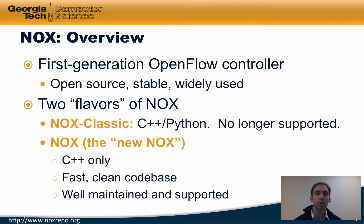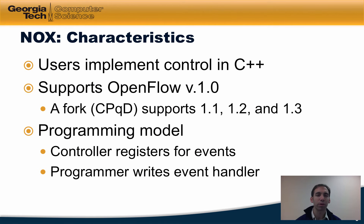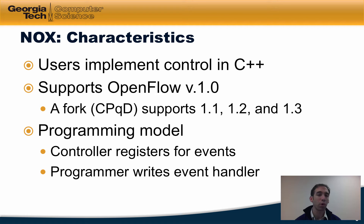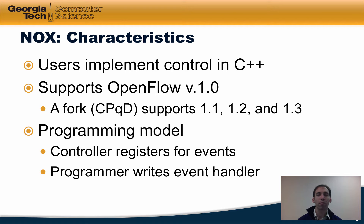The new NOX is fast, has a clean code base, and is well maintained and supported. Users implement control applications in C++. The NOX distribution supports OpenFlow version 1.0, and there is a fork called CPQD that supports OpenFlow versions 1.1, 1.2, and 1.3. The programming model is similar to many OpenFlow controllers: a controller registers for events, and the programmer writes event handlers that take specific actions when those events are raised.